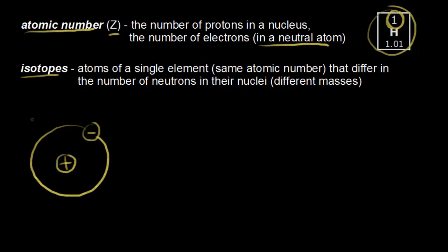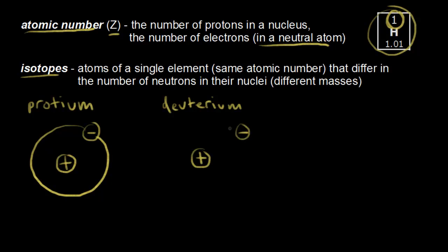This is one isotope of hydrogen, called protium. Isotopes are atoms of a single element that differ in the number of neutrons in their nuclei. The next isotope of hydrogen is called deuterium. Deuterium is still hydrogen, so it has one proton and one electron, but protium has zero neutrons in the nucleus while deuterium has one. Since neutrons have mass, deuterium has more mass than protium.